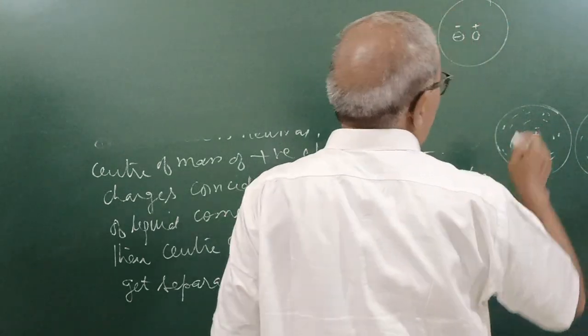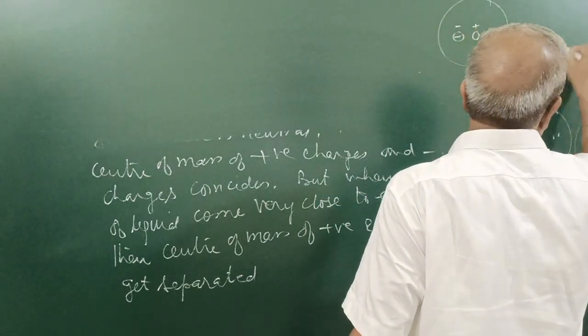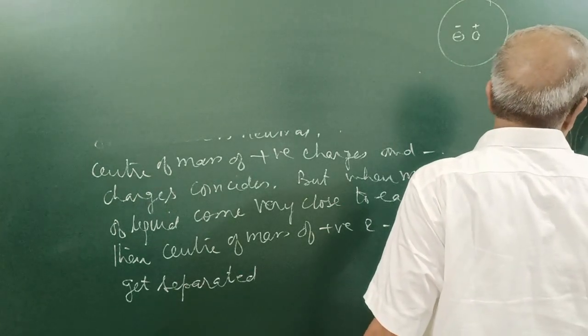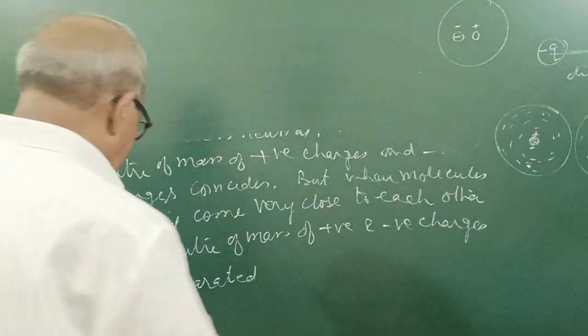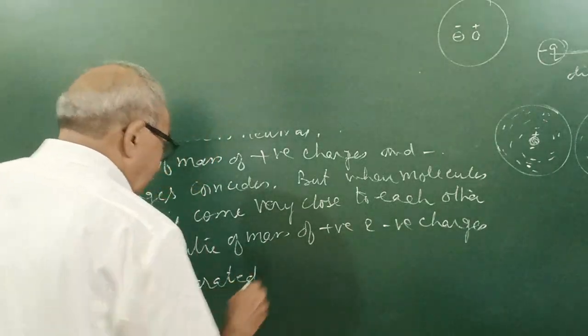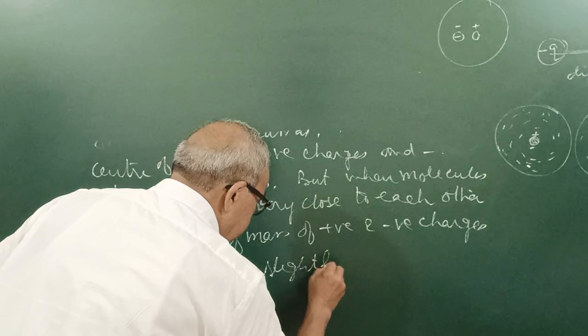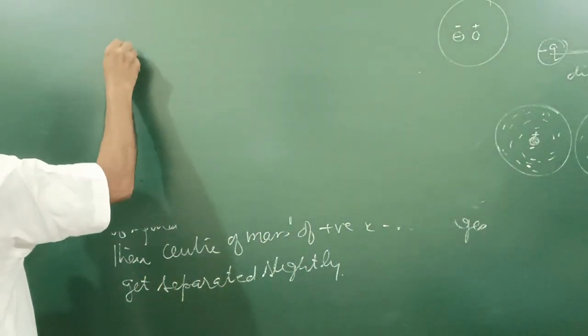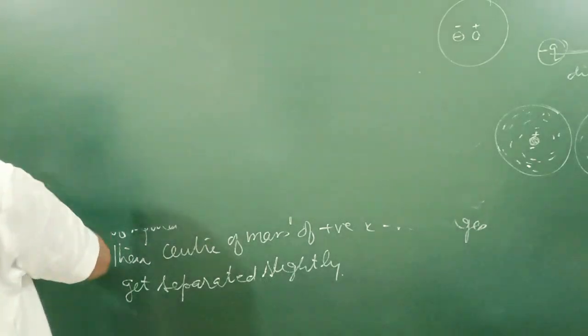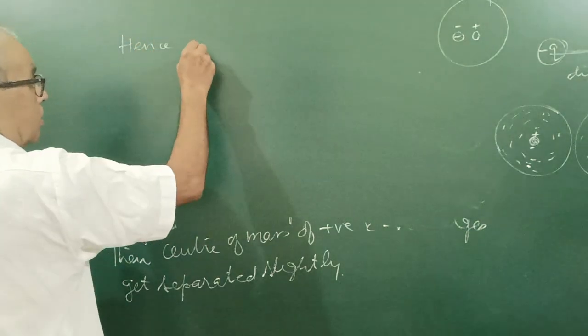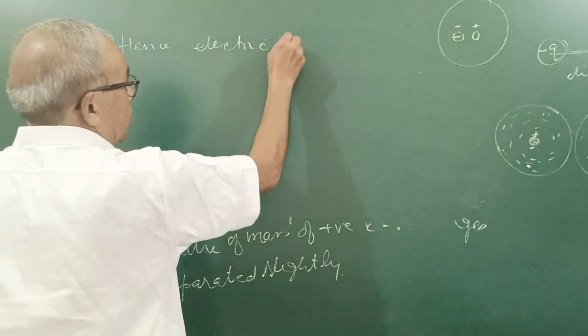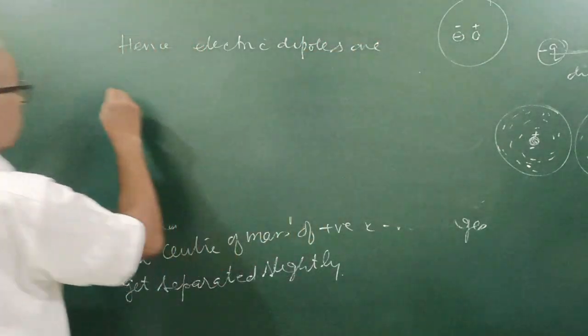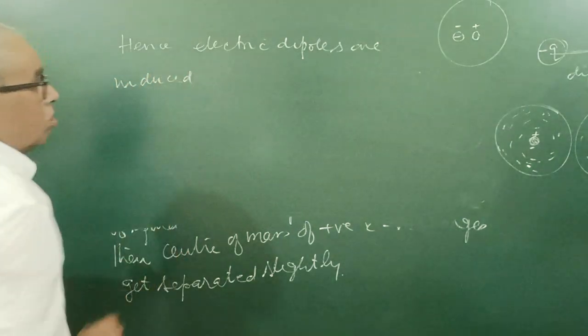If it is the atom here or molecule, center of positive charge here, negative charge this way. And if two equal and unlike charges are kept at certain fixed distance, that is called electric dipole. And hence electric dipoles are induced.